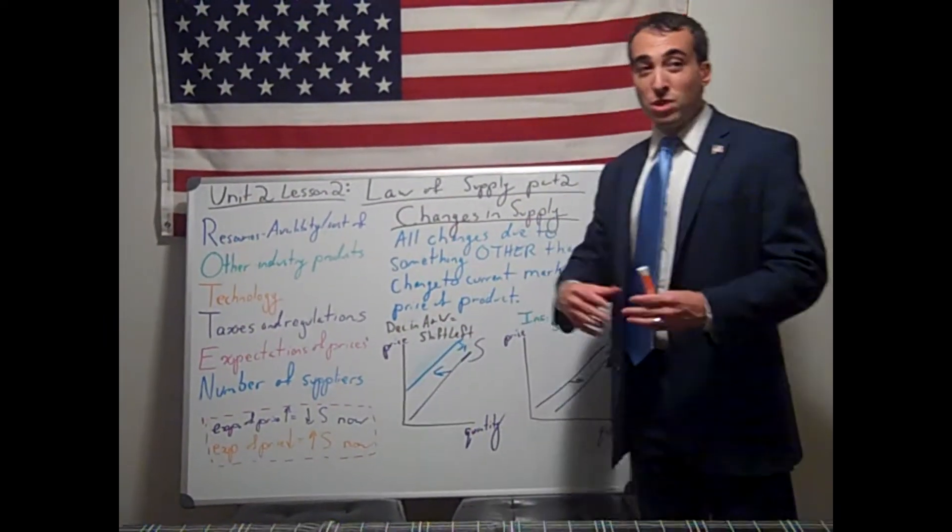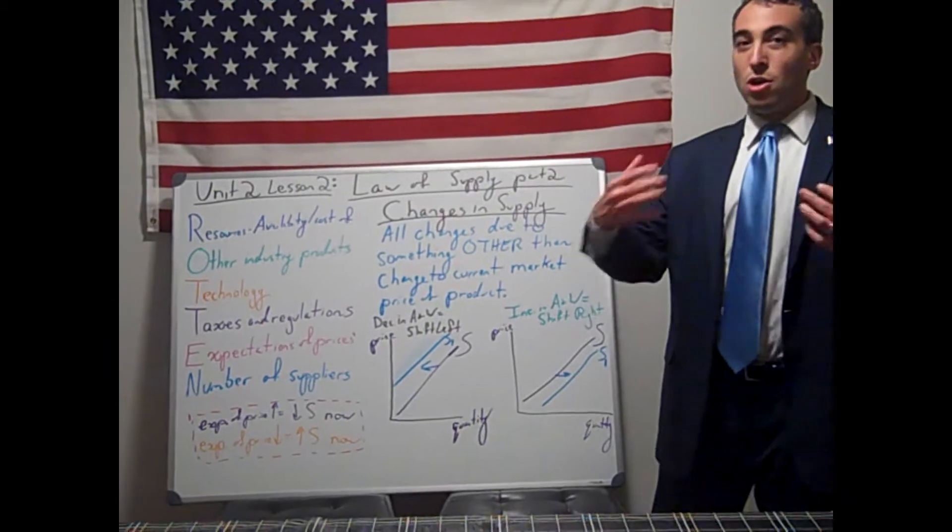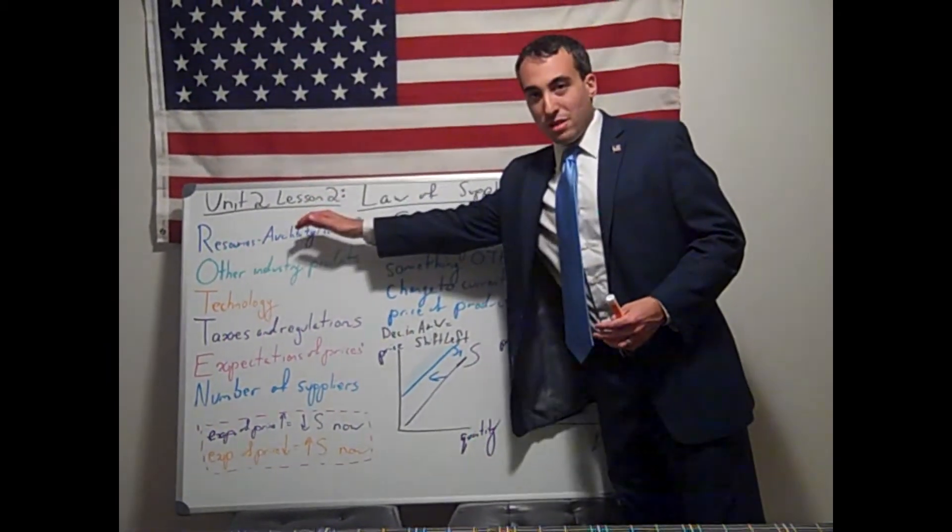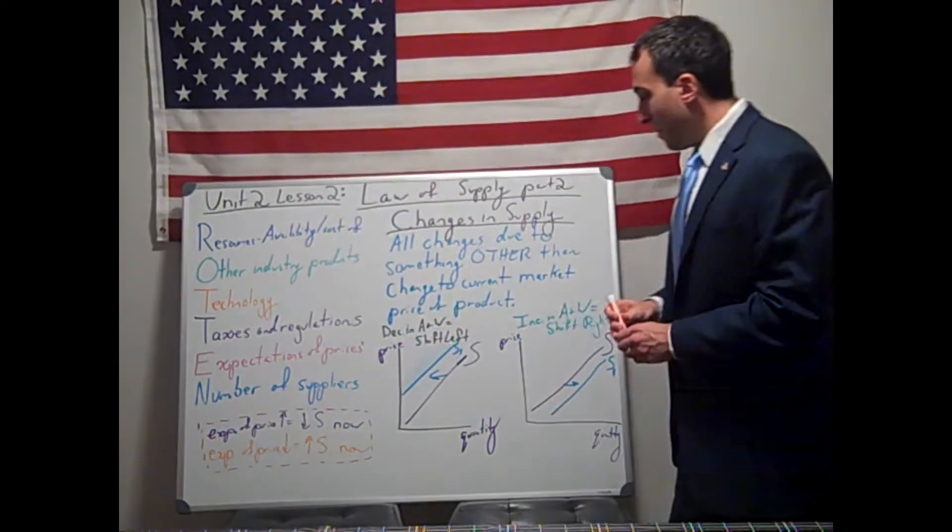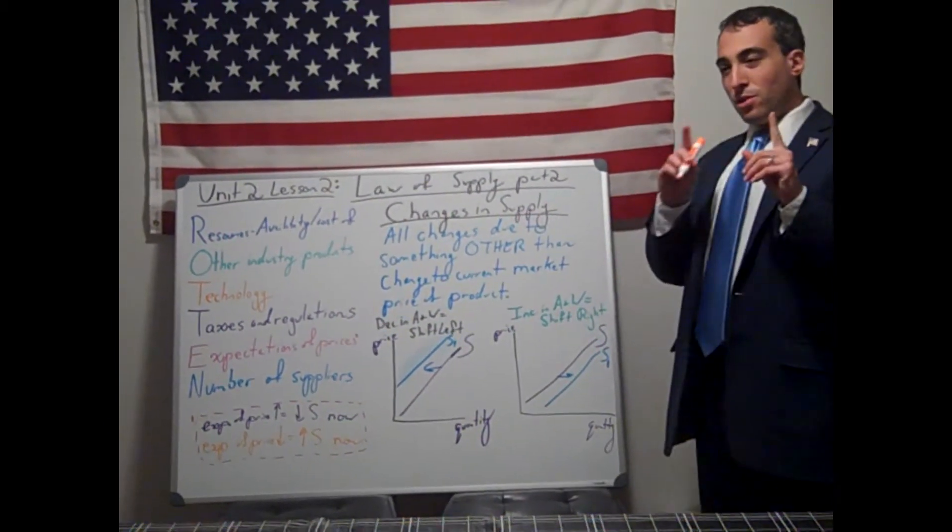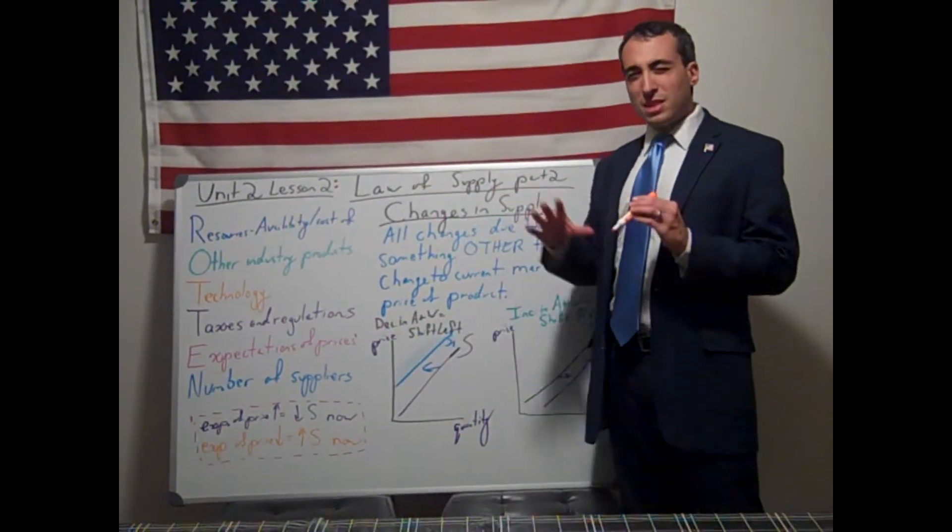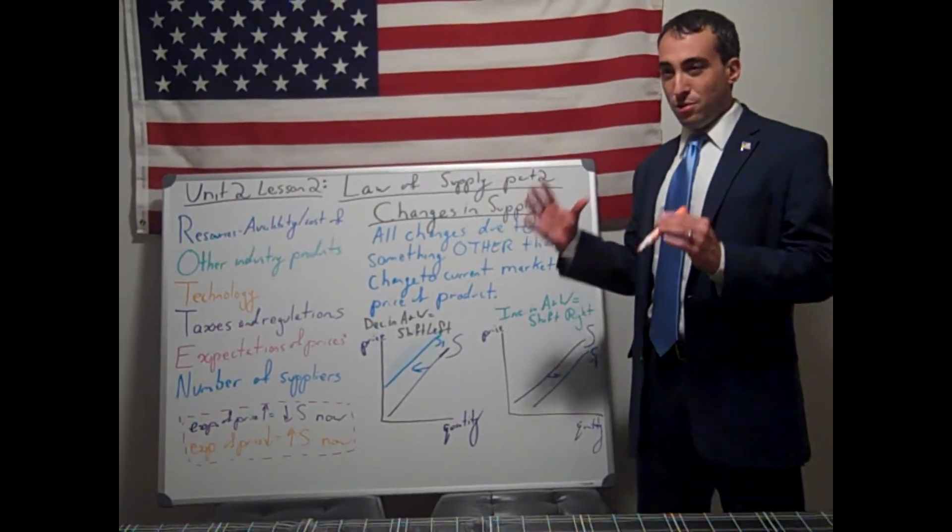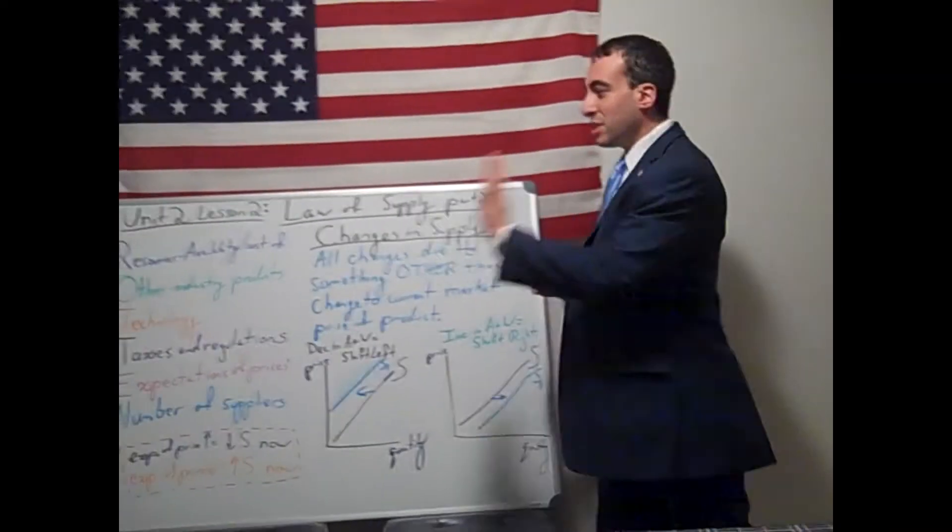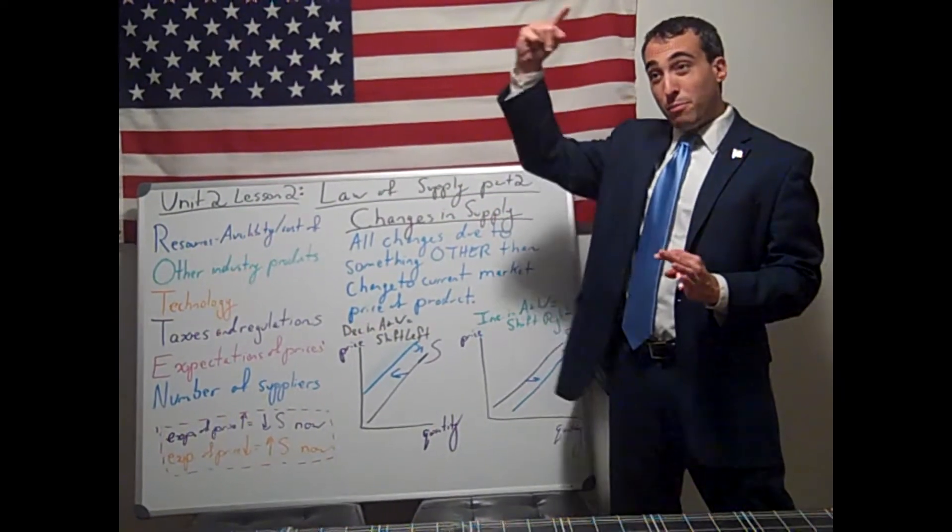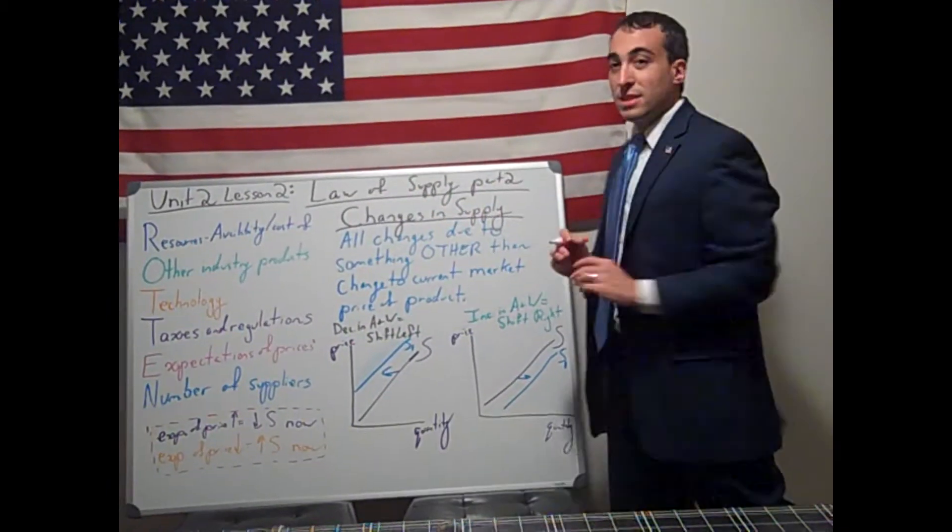So a decrease, this would decrease the ability and willingness of businesses to produce. All of a sudden, the labor resource just increased in price. And this is very important for the law of supply, be careful when supply shifts, it looks like it's an optical illusion. Remember, when graphs shift, they either shift left or they shift right. They don't shift up or down. Left is decrease, right is increase.